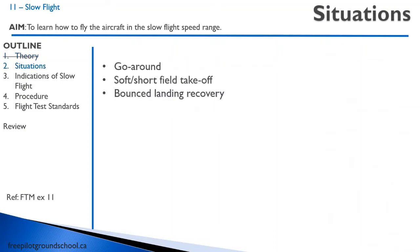So when might we be in slow flight? We're going to be in slow flight on go-arounds, short and soft field landings, and bounce landing recoveries. Slow flight is not like approaching at 65 knots coming in for landing — that's not slow flight. When we talk about slow flight, we're actually going to be at a higher power setting but going really slow, because we're on the backside of the power curve.